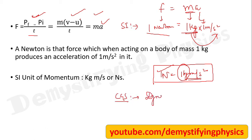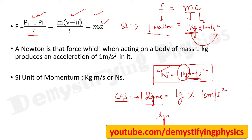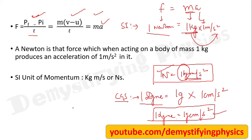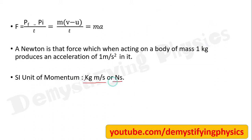The CGS unit of force is the dyne. 1 dyne equals 1 gram·cm/s². We can define 1 dyne as that force which, when acting on a body of 1 gram mass, produces an acceleration of 1 cm/s².